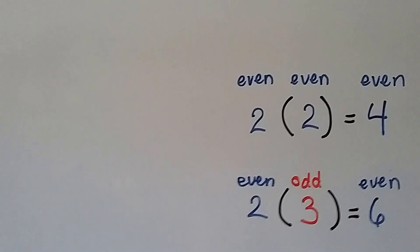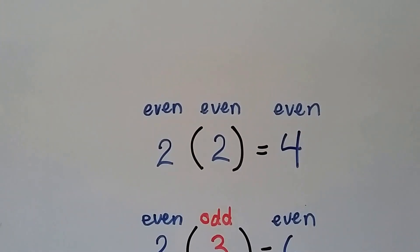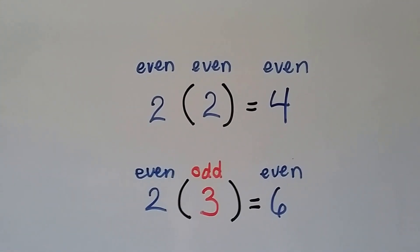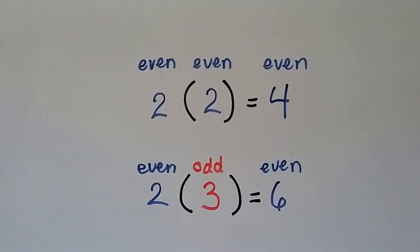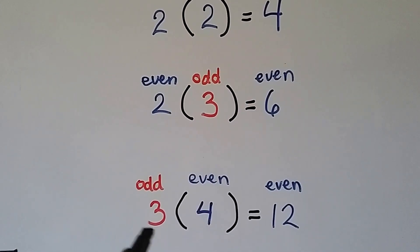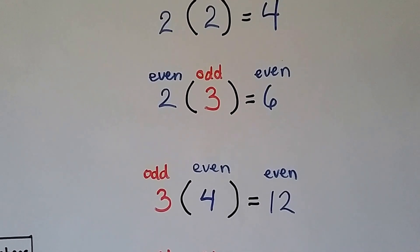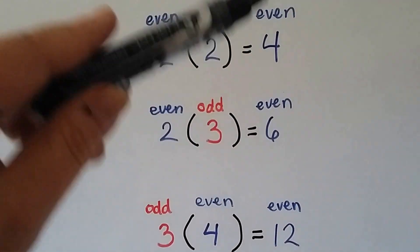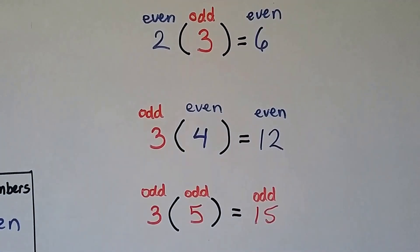Look at what happens: two is an even number, and if we multiply two times two we get an even number — four. Now three is an odd number; when we multiply the even times the odd we get an even, just like our rule said. If we switch places with the even and odd, the commutative property says it doesn't matter — we still get an even number. So if you multiply an even times an even, or an even times an odd, you're always going to get an even answer.